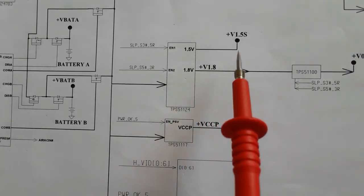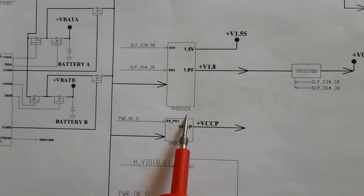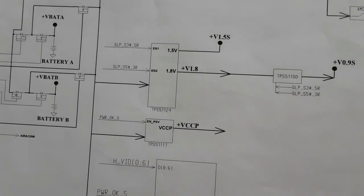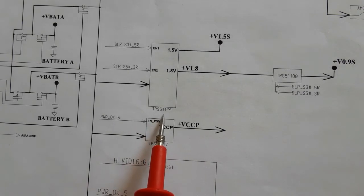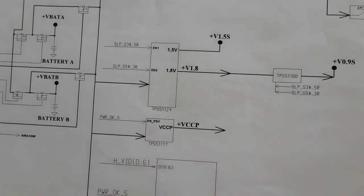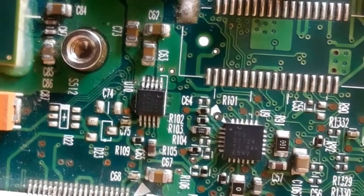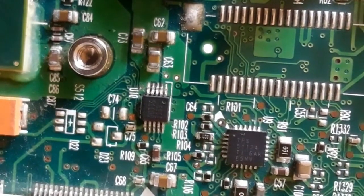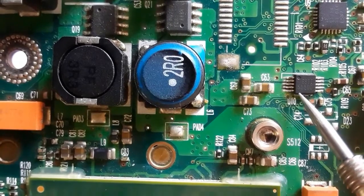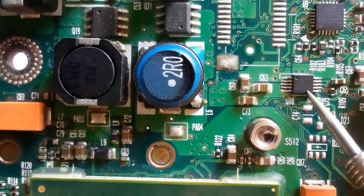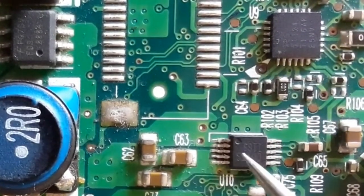Let's see the power management IC for 1.5V and 1.8V — the TPS51124. Let's also see the TPS51100, which is responsible for generating 0.9V for the RAM. Here we have the TPS51124 on the right, and over here we have the TPS51100 — this is the power management IC that generates 0.9V for the VTT for the RAM. These two ICs you will always find near to each other.